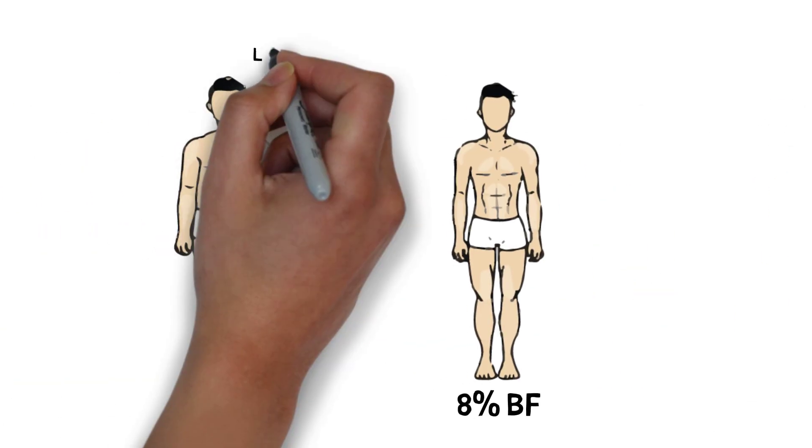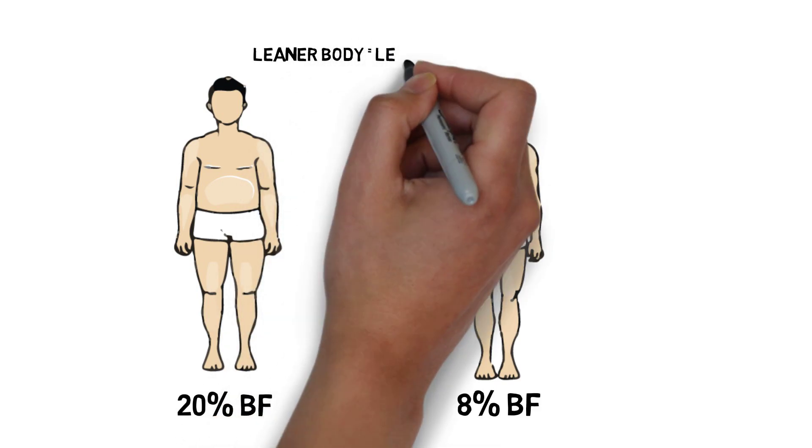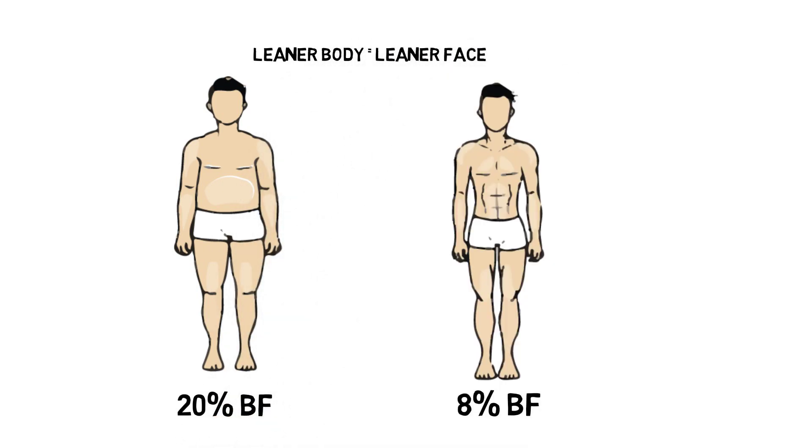So the only way to get a leaner face would be to simply lose fat all over your body. And you do this by burning more calories than you consume. You can't target fat in a specific area of your body.